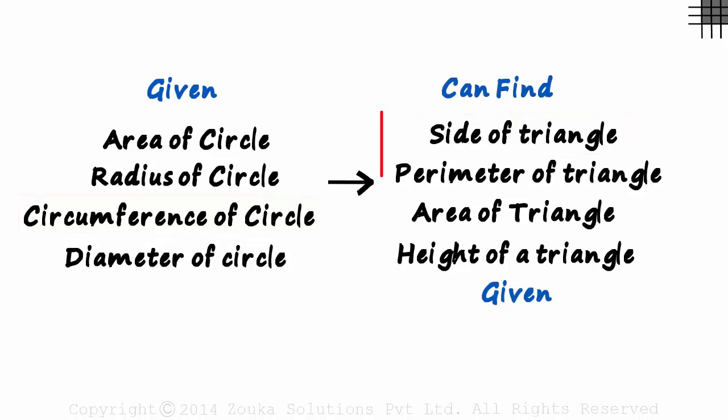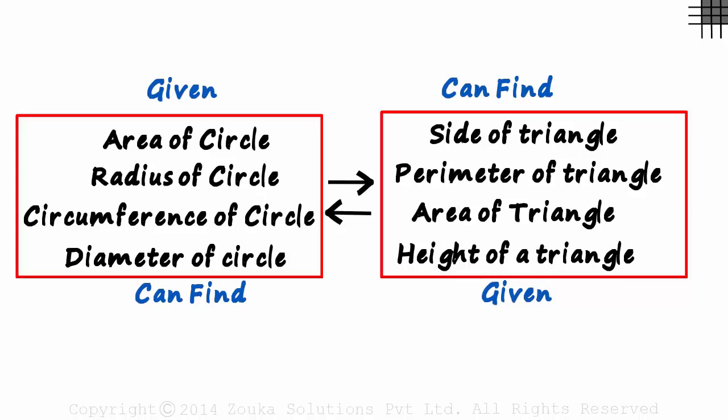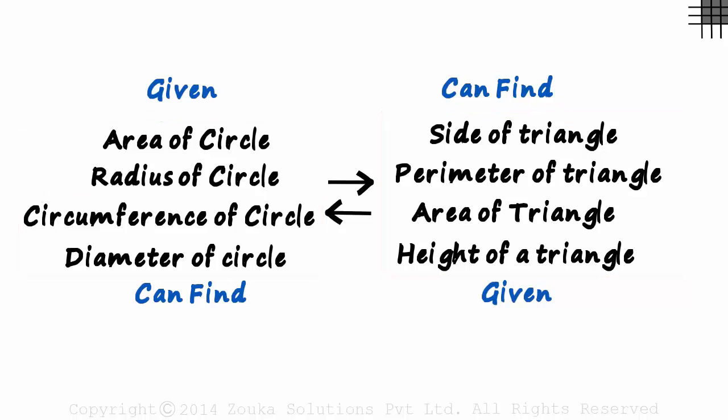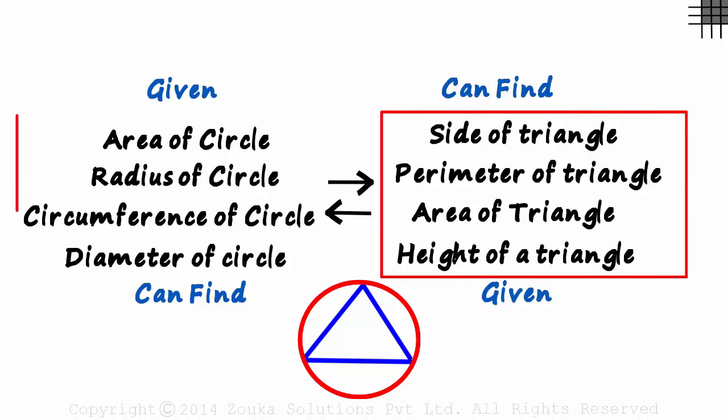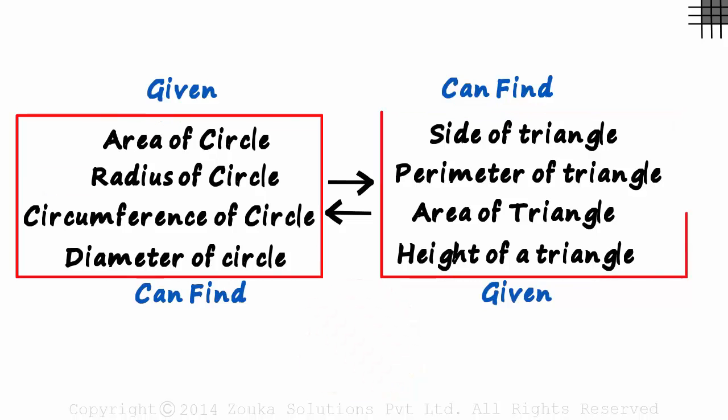And also, if you are given any of these, you can find any of these. Trust me, this is interesting. You can even form your own example to try it out. Make an equilateral triangle, form a circle around it, and with any of these given, try finding out the others.